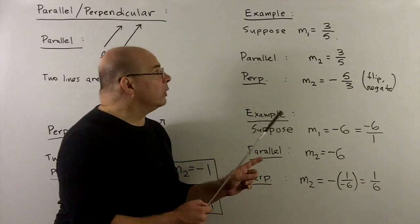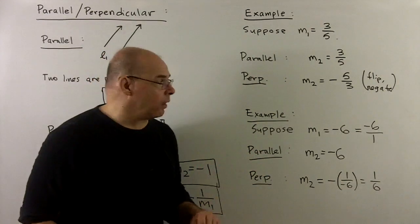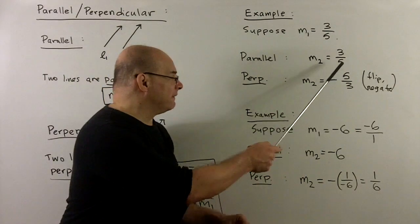For the perpendicular, what do we do? We're going to take the 3/5, flip it, turn it upside down, and then put a minus sign in front. So we'll get minus 5/3.